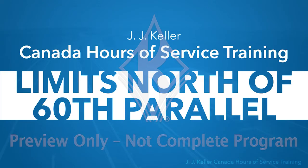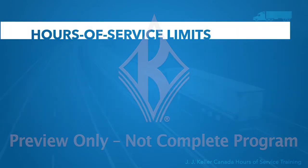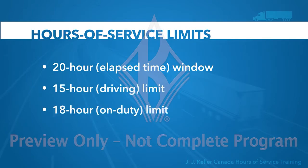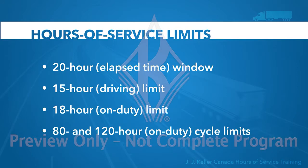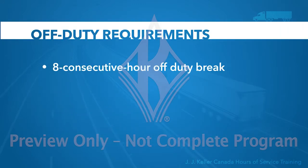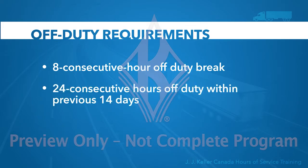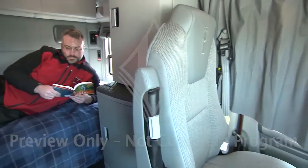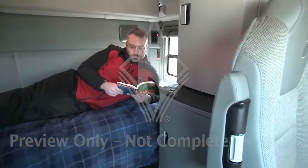You're learning about limits north of the 60th parallel. These limits include the 20-hour window, 15-hour driving limit, 18-hour on-duty limit, and the 80-hour and 120-hour on-duty cycle limits. The 8 consecutive hour off-duty break rule and the 24 consecutive hours off-duty within the previous 14 days requirement make sure you have enough time off-duty between work cycles.